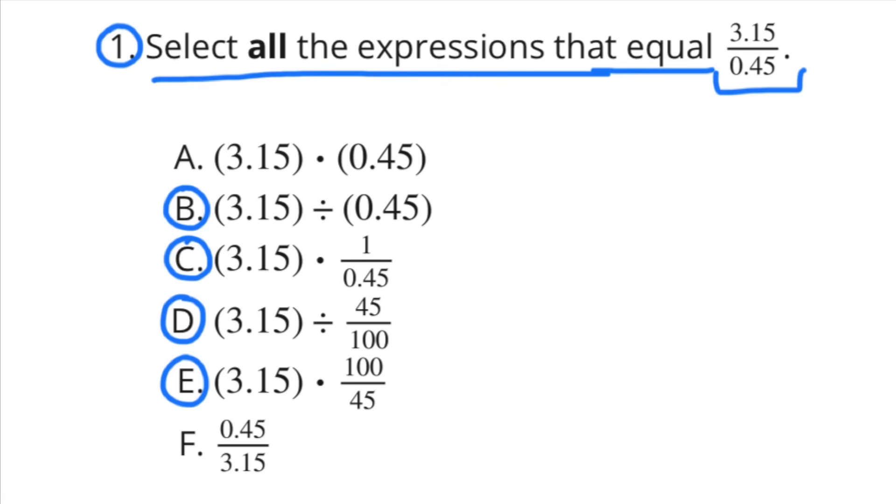Well, 3 and 15 hundredths over 45 hundredths means 3 and 15 hundredths divided by 45 hundredths. So we can circle B. We can circle C because 3 and 15 hundredths times 1 over 45 hundredths is the same thing as 3 and 15 hundredths over 45 hundredths.